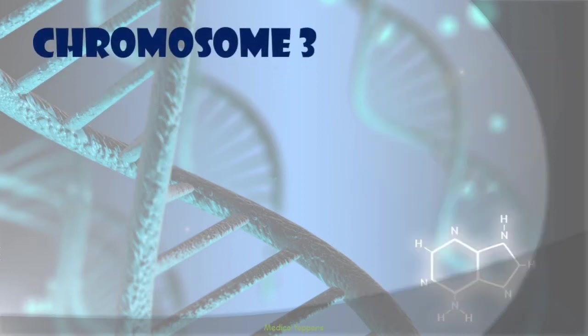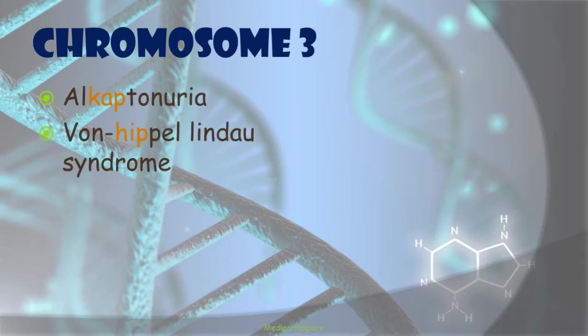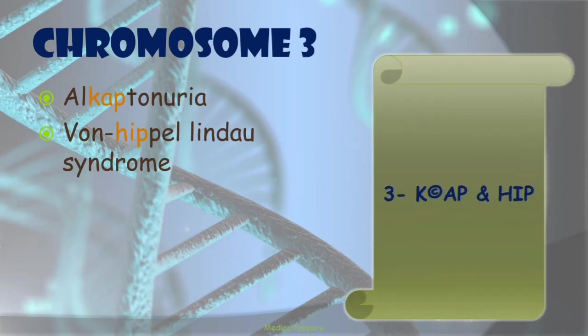Now comes chromosome 3. The diseases are Alkaptonuria and Von Hippel-Lindau syndrome. The mnemonic uses similar-sounding words: '3, Cap and Hip.' 'Cap' is for Alkaptonuria and 'Hip' is for Von Hippel-Lindau syndrome.